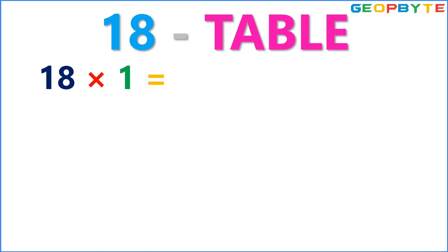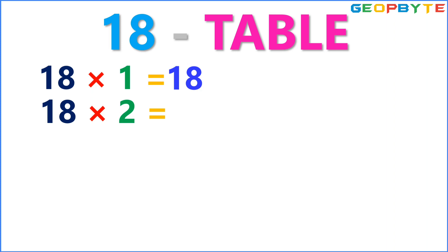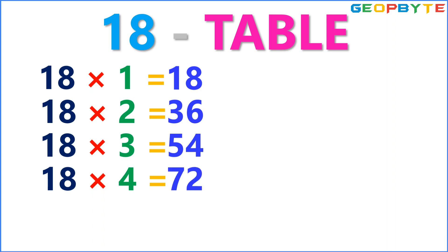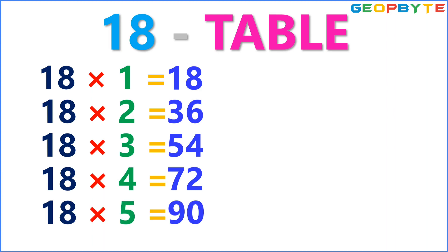18 ones are 18. 18 twos are 36. 18 threes are 54. 18 fours are 72.